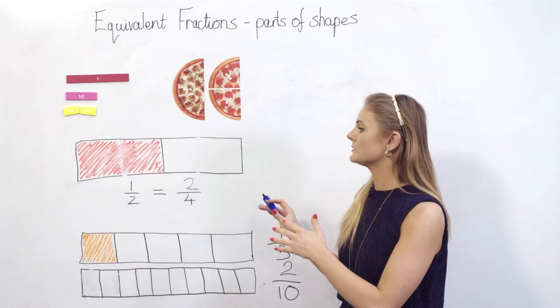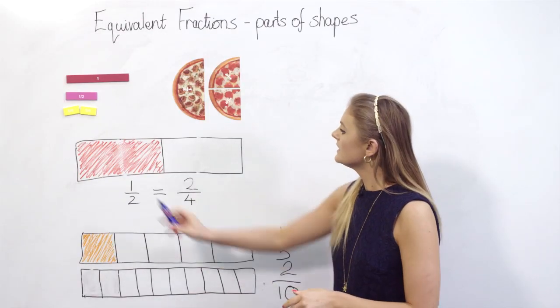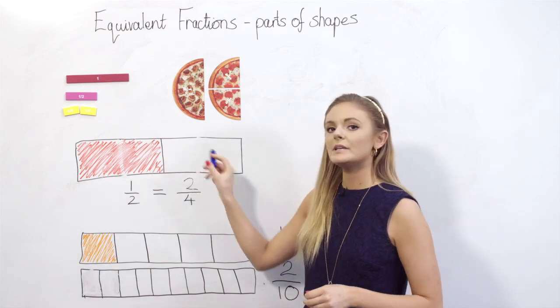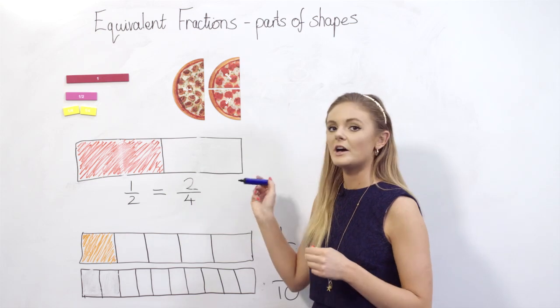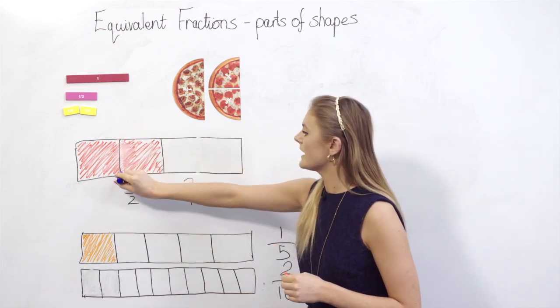Let's have a look at a bar model to help us visualize this. So here I have a bar. I've divided it into two equal parts or halves. If I were to divide each half in half again, I would create quarters.